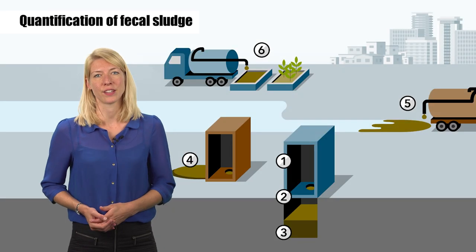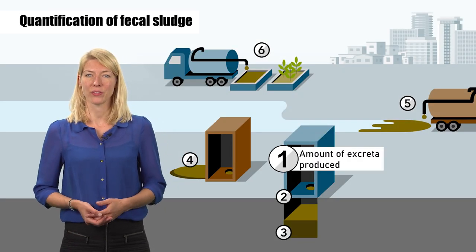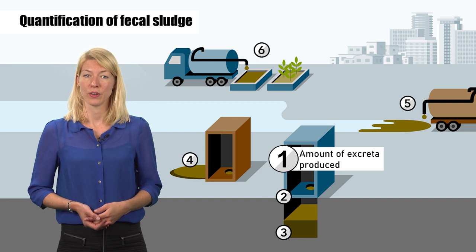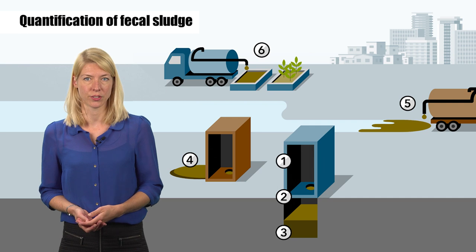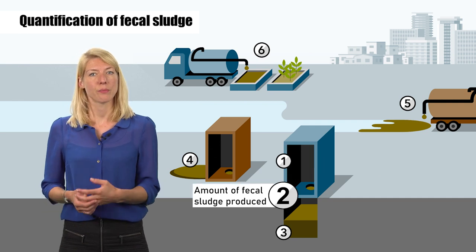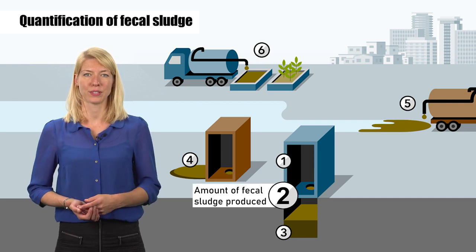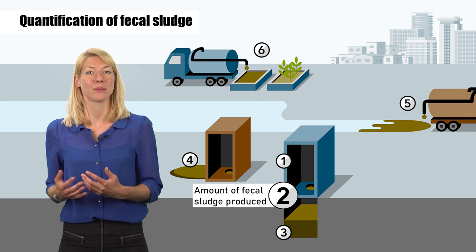In this figure, number one is the amount of excreta that is produced, so feces and urine, which alone are not fecal sludge. Number two is the amount of fecal sludge that is produced, so excreta plus what is going into the containment along with it, like cleansing material or flush water.